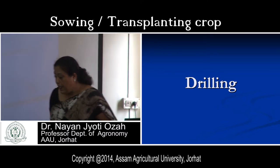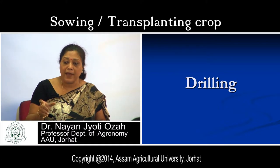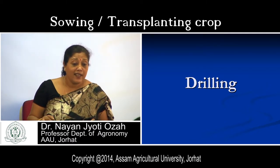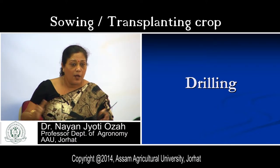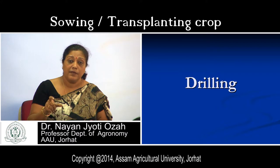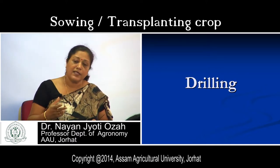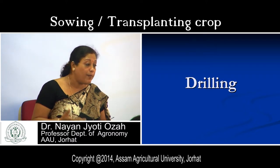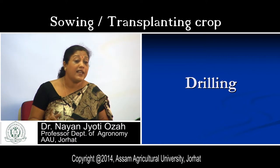In the case of drilling, we normally use a seed drill — a simple implement by which we can sow seeds while maintaining proper row-to-row spacing, plant-to-plant spacing, and depth of sowing. These three things can be maintained when you use a seed-cum-fertilizer drill. If these implements are not available, you can simply sow seeds by hand, making furrows at specific dimensions — there should be proper distance between two rows or lines.